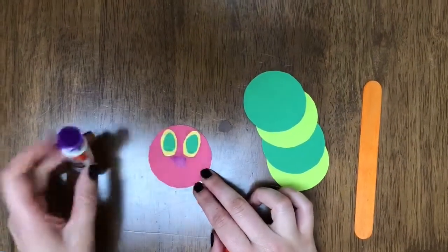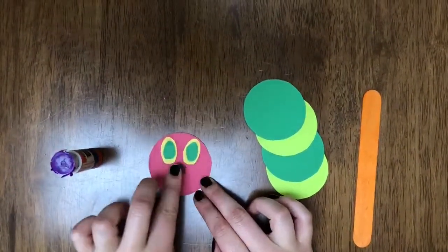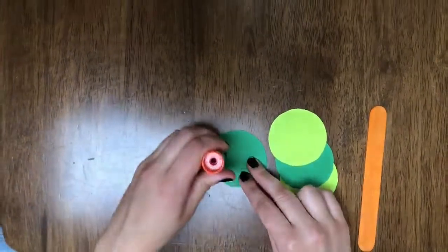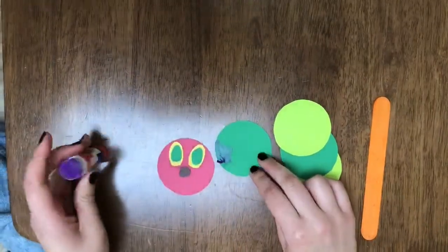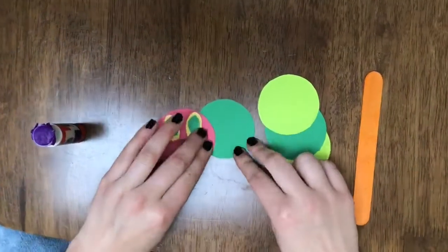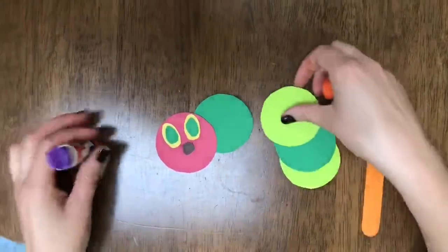Then we're gonna do one little nose like this and then we're gonna glue the caterpillar so that it's only on part of one of the circles of the body so that he can kind of stretch out.